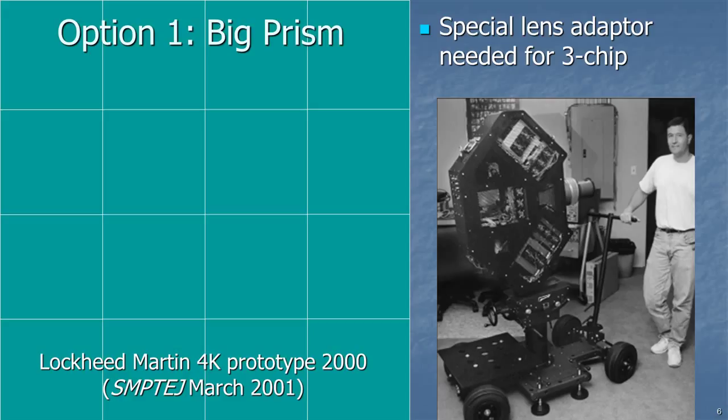So if you want to change to a 4K camera, one option would be to just blow everything up and make it bigger. Sure enough, Lockheed Martin made a prototype 4K camera in 2000 using this technique — you can see it on the right, and it's extremely big. It needed a special lens adapter. That really didn't go much of anywhere, except it did spark the 4K revolution.